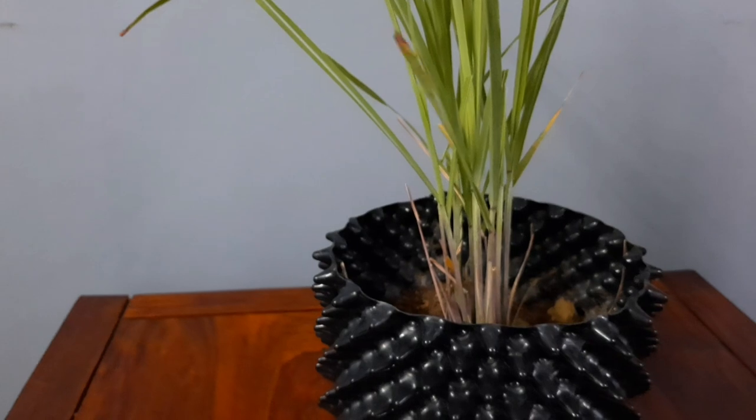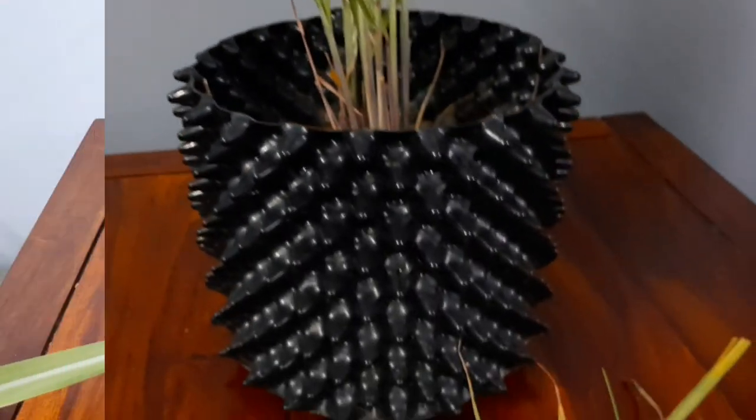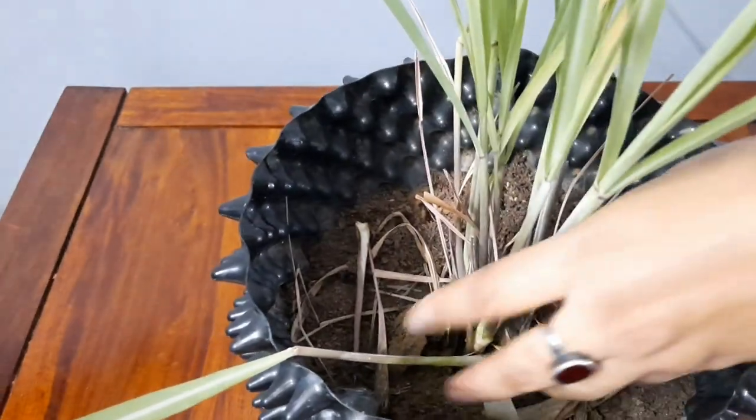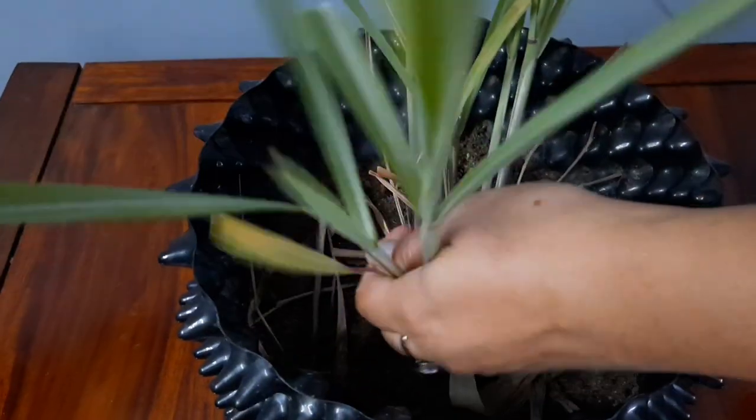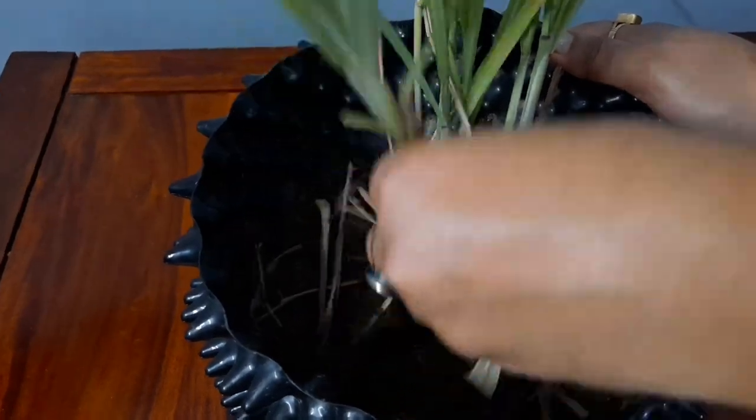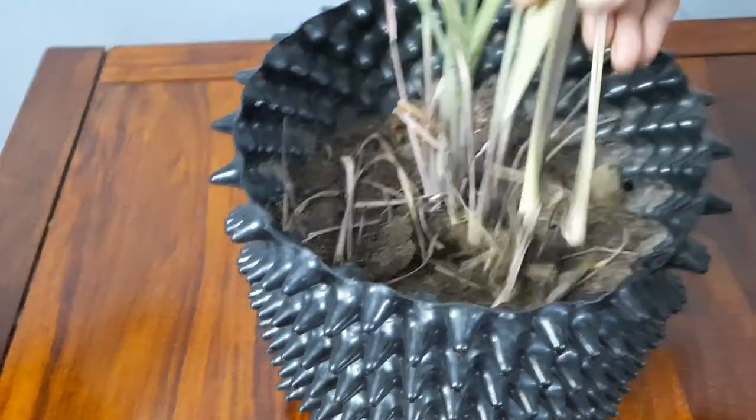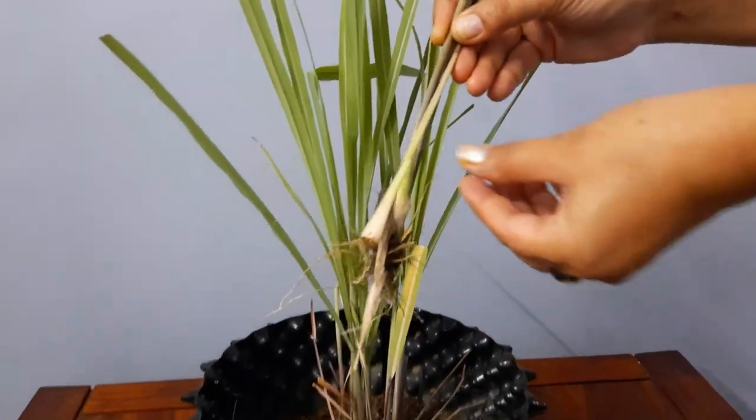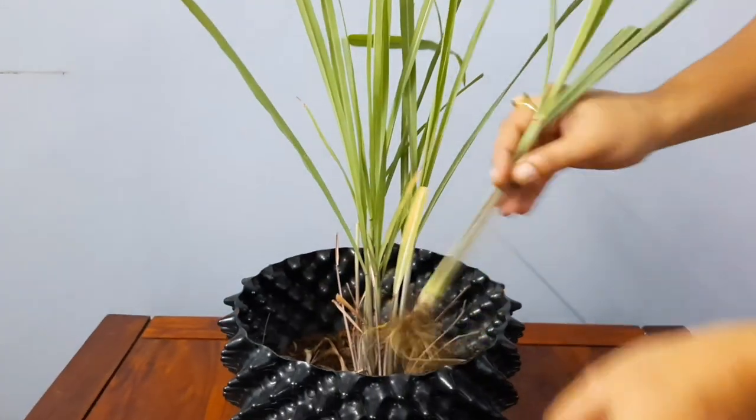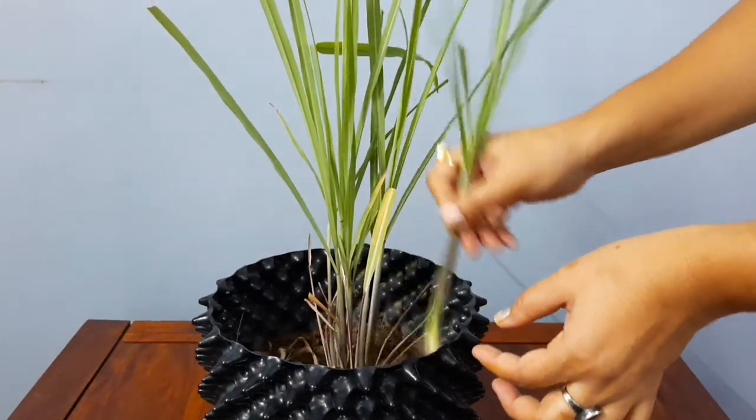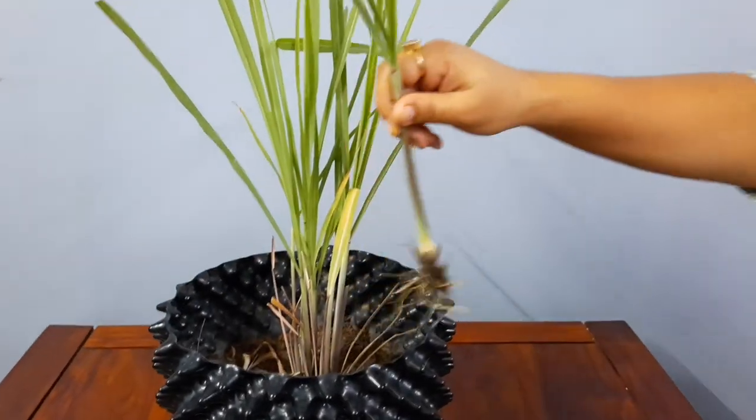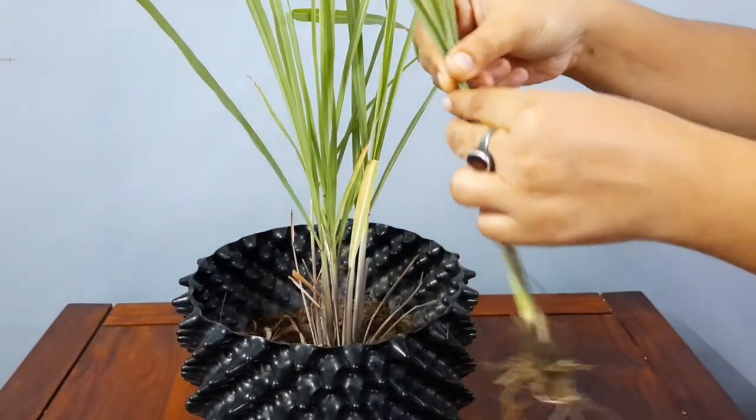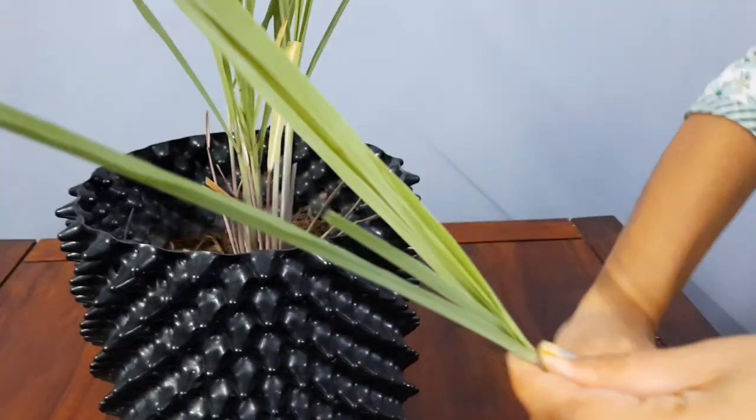So let's see how we propagate it. We can easily propagate the lemongrass from vegetative propagation. You have to use a grass strand to just root it. See, this is such a large root system.